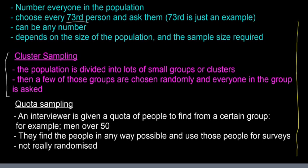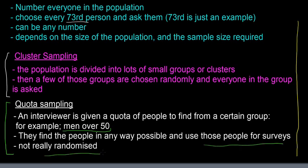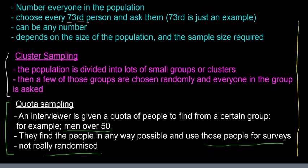One of the last ones is quota sampling. For quota sampling, an interviewer is given a quota of people to find from a certain group. For example, they have to find 100 people from the group 'men over 50', and the interviewer can find those people in any way possible and use them for the survey. It's not really that randomized, but it is used quite often because it's easy.